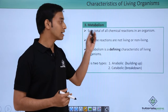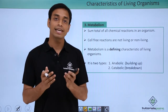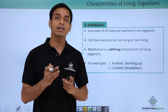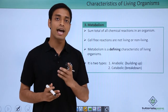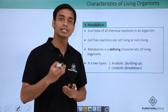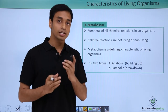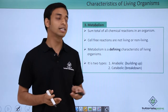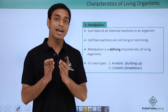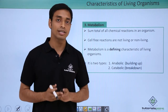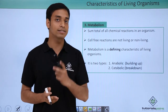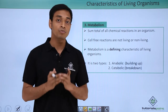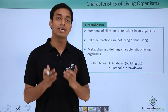The next characteristic is metabolism. Metabolism is the sum total of all chemical reactions happening inside an organism or inside a cell. These chemical reactions can also happen outside cells — for example, inside a test tube. We cannot consider those as living or non-living, but we call them biochemical reactions. Hence, metabolism can be considered a defining characteristic of living organisms, because these biochemical reactions make life on Earth possible.